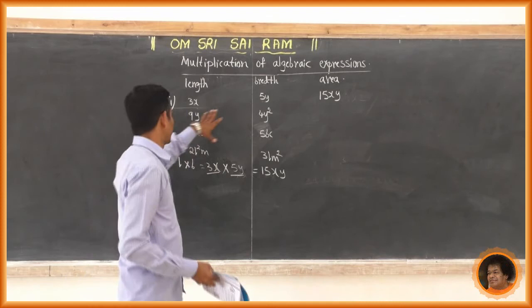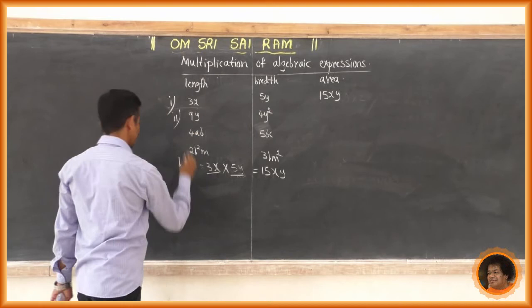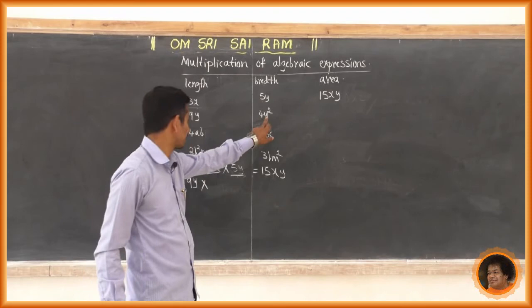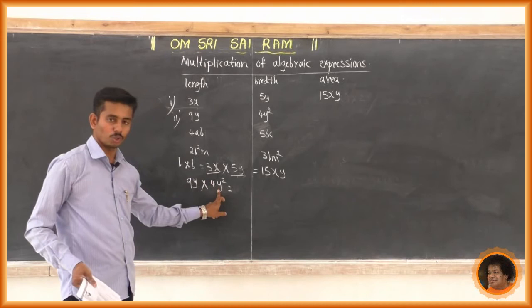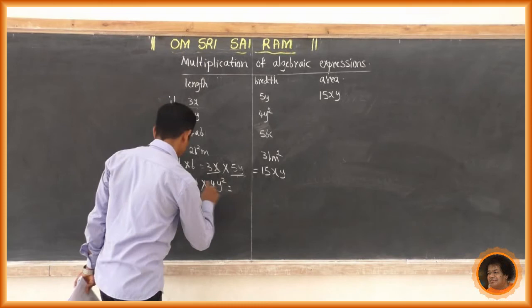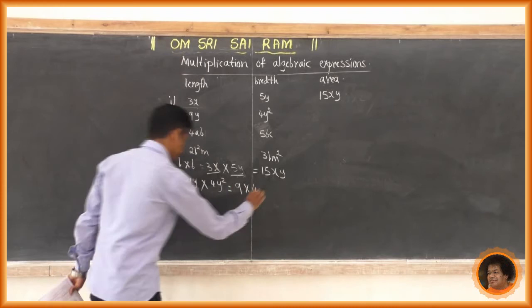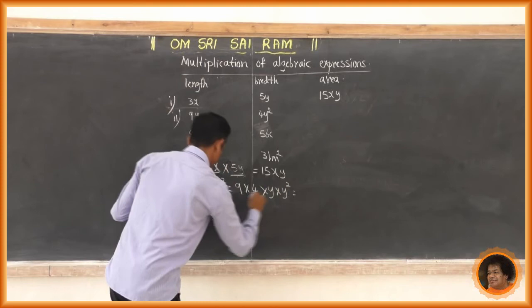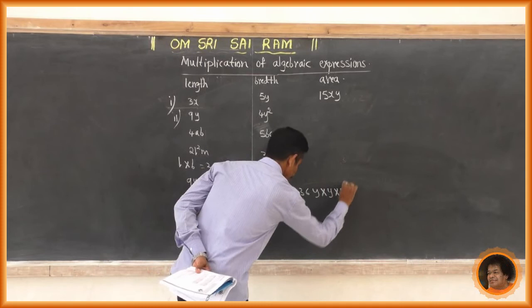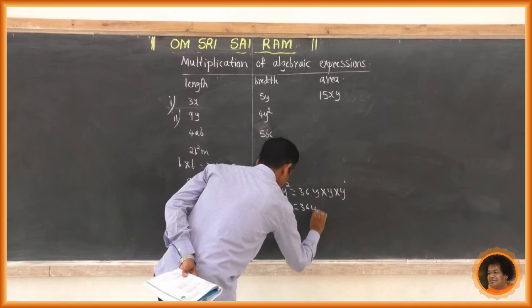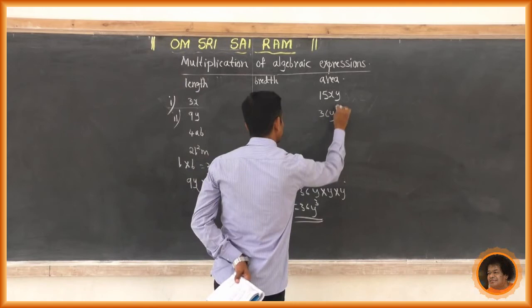In the second case, length is 9y and breadth is 4y squared. Area equals 9y into 4y squared. Multiply 9 into 4 to get 36. Then y into y squared: counting the y's gives y cubed. So the area is 36y cubed.